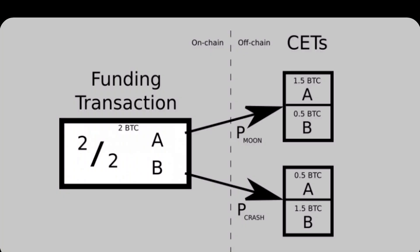We've computed the public keys associated with those different event outcomes, we've formed the contract execution transactions, and now the funding transaction can be published to the blockchain. In our case, it's 24 hours — does the price of Bitcoin go up or down? Whatever oracle we're using to convey that information would convey it and the appropriate CET would execute accordingly. What just happened is that two parties were able to form a very simple contract without revealing anything about the contract to the public. None of the context of moon or crash was discernible on the public Bitcoin blockchain. All you can see on-chain is the funding transaction and then ultimately the movement of funds once the contract settles.